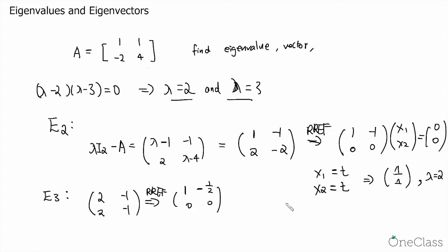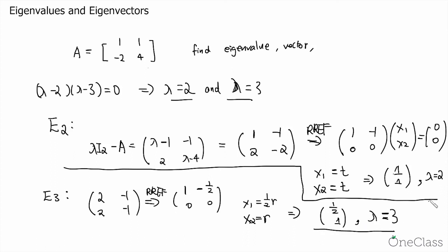And similarly, we can solve the homogeneous linear system of equation. Then in this case, we'll get x2 equals to r, and x1 equals to half r, which then gives us half and 1. And this is the eigenvector for lambda equals to 3. And hence, we have found all the eigenvalue and eigenvectors for the matrix A.